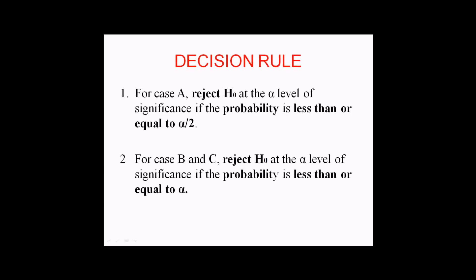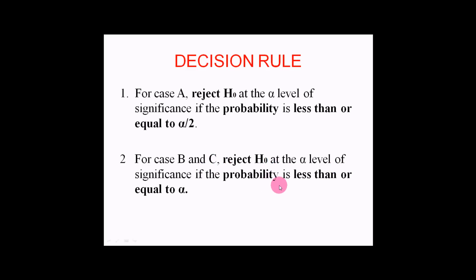Decision rule: for case A, reject H₀ at the alpha level of significance if the probability is less than or equal to alpha over 2. For cases B and C, reject H₀ at the alpha level of significance if the probability is less than or equal to alpha.